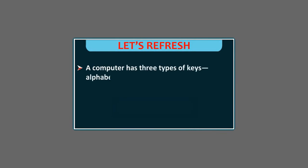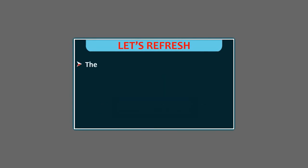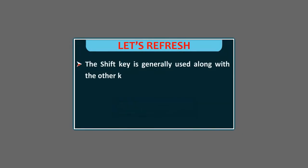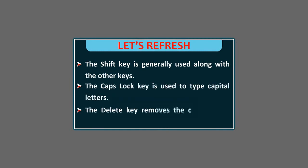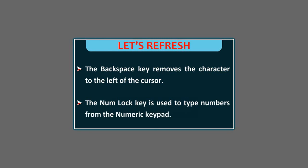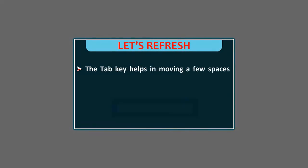Let's refresh: A computer has three types of keys — alphabet keys, numeric keys, and special keys. The four arrow keys move the cursor up, down, left, and right. There are two Enter keys on a keyboard. The Spacebar key is the longest key. The Shift key is used along with other keys. The Caps Lock key is used to type capital letters. The Delete key removes the character to the right of the cursor, and the Backspace key removes the character to the left. The Number Lock key is used to type numbers from the numeric keypad. The Tab key helps move a few spaces forward. There are 12 function keys on the keyboard.